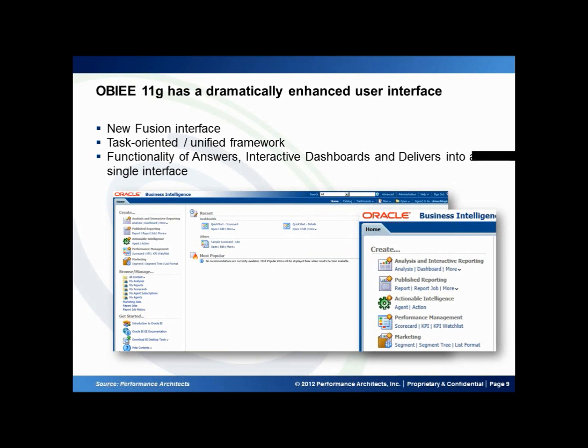Let's talk about what's new in the latest version of OBIE. The latest version is 11G, and it has a dramatically enhanced user interface. This is a screenshot of the OBIE homepage, which serves as a landing point with all types of reporting available. We have things like analysis and interactive reporting, published reporting, actionable intelligence, performance management, and marketing. These are all modules of OBIE, unified in one space.